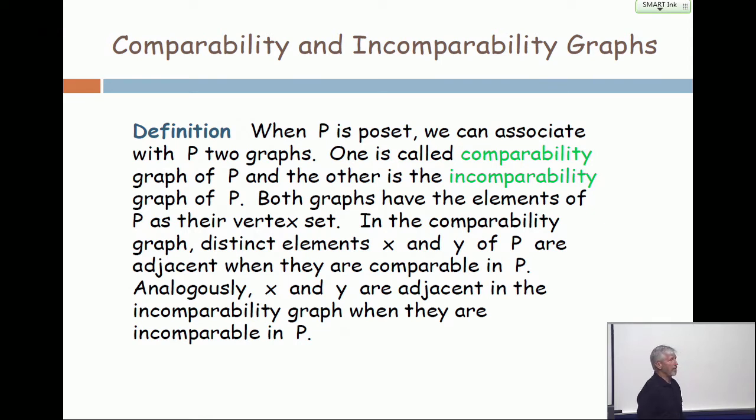They both have the elements of P as the vertex set. In the comparability graph, two vertices are adjacent when they're comparable. And analogously, two vertices are adjacent in the incomparability graph when they are incomparable. These two graphs are complements of each other, obviously.